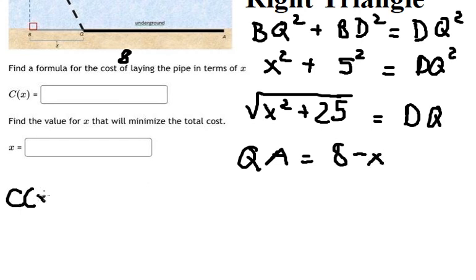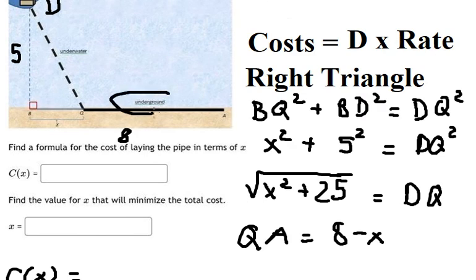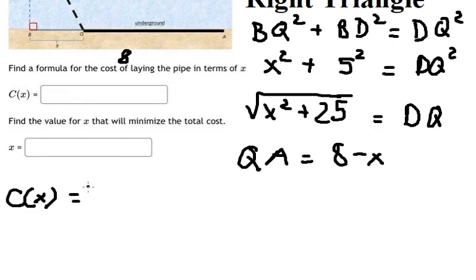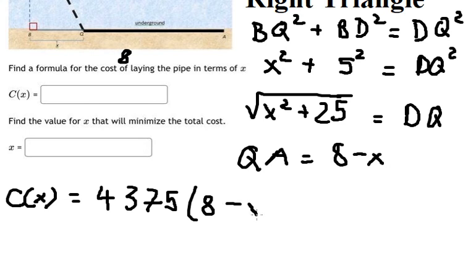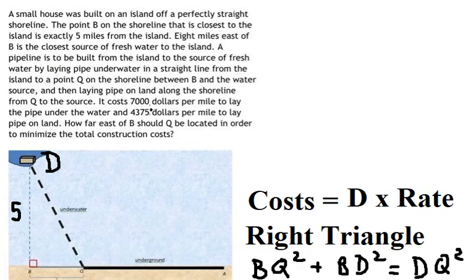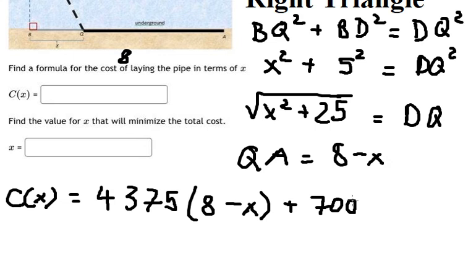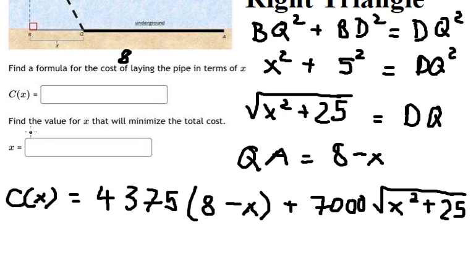Now for the total cost, we have: cost on land equals four thousand three hundred seventy-five multiplied by the distance (eight minus s), and cost under water equals seven thousand multiplied by the distance DQ, which is the square root of s squared plus 25. This completes part one. For part two, we need to find the value of s that minimizes the total cost.